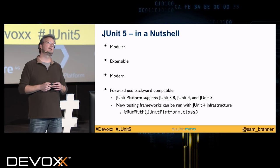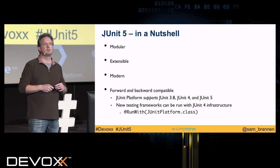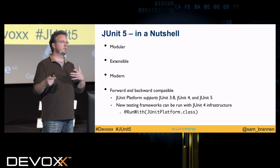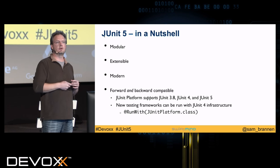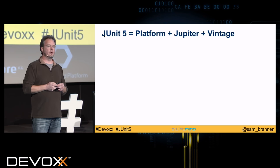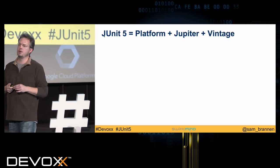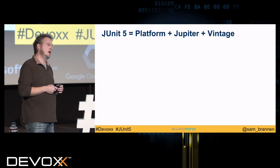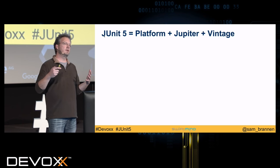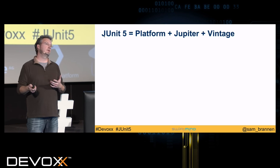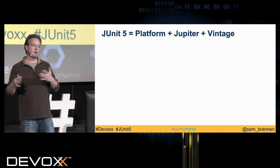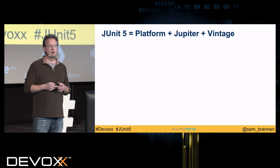If you look at JUnit 5 early on, it was all one big project. For M1, after a lot of internal discussion, we modularized it. JUnit 5 is not one thing — it's actually a platform, JUnit Jupiter, and JUnit Vintage. In the past, JUnit 4 was everything: the programming model, the extension model, the platform, and discovery all in one thing. We figured we need to split this up so these things can evolve at different rates over time.